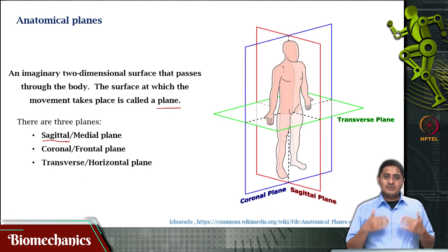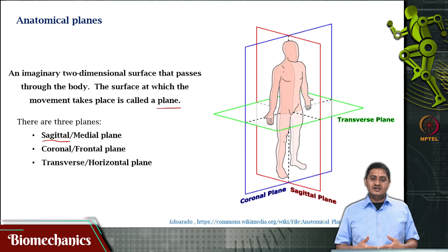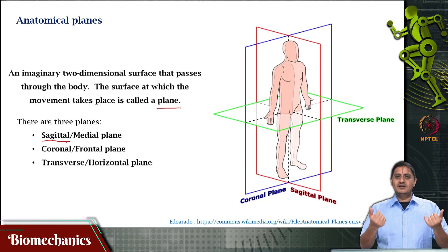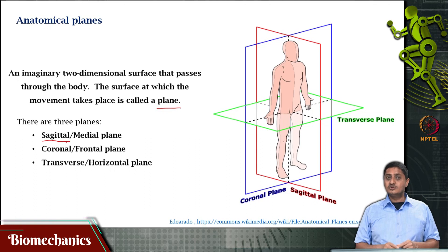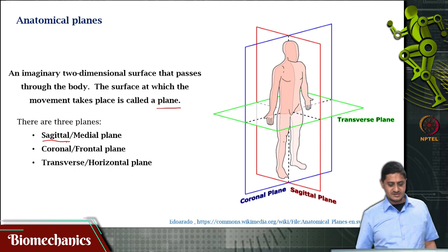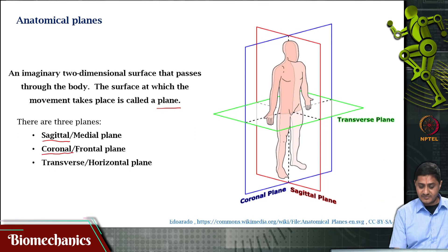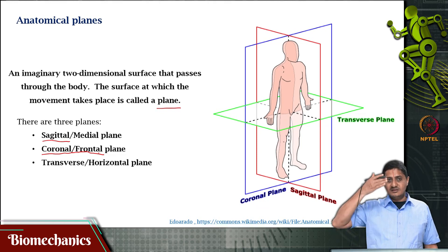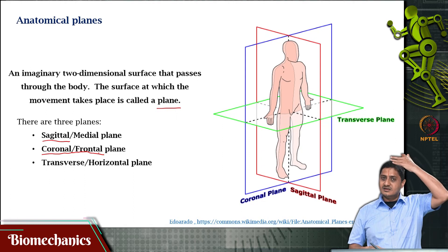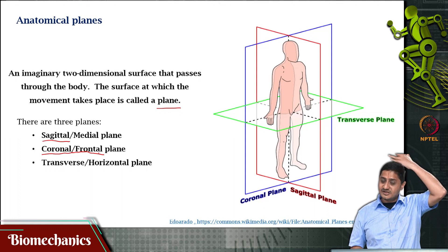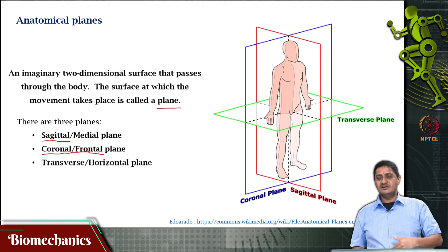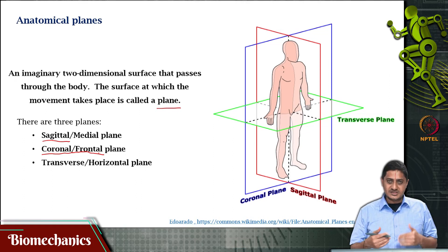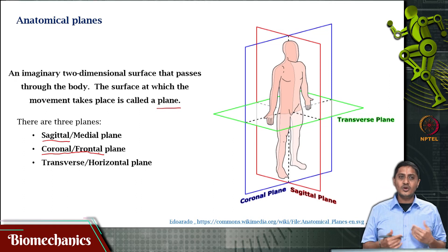The plane which passes through the body and divides it into a front part and a back part — not necessarily two halves — is called the coronal plane or frontal plane. Remember, there can be many coronal planes; there can be one that passes at the beginning of the head and one that passes at the middle of the head. That plane that divides the body into a front and a back part is called the coronal plane.